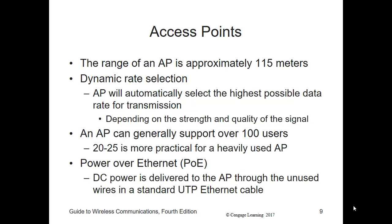If you've got walls in between, you're going to have scattering, diffraction, deflection, reflection, and just impedance will occur. The AP will automatically select the highest possible data rate for transmission depending on the strength and quality of the signal it receives from mobile devices — that's called DRS, or dynamic rate selection. Because connection speed is so dependent on the environment, testing the signal before implementation of a wireless plan is going to be extremely important.